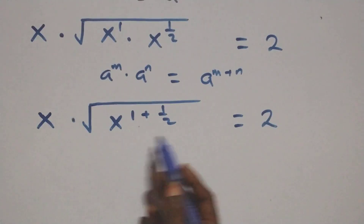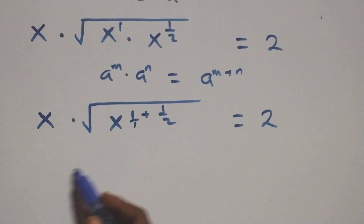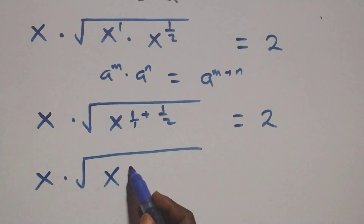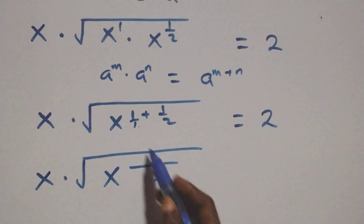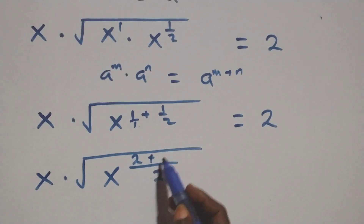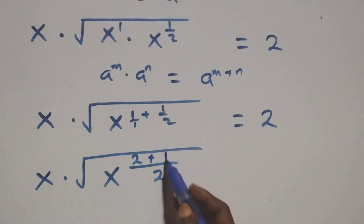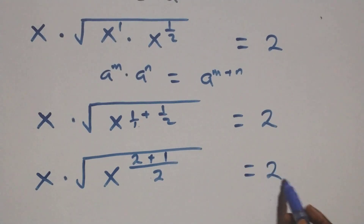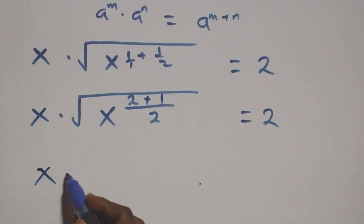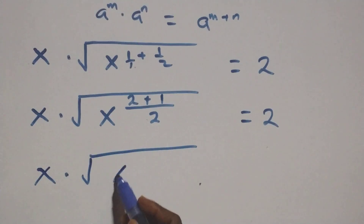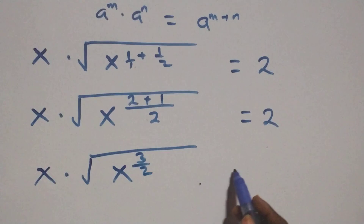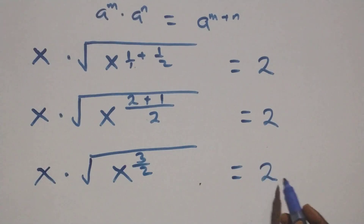We bring this power together. This is 1 over 1, so the exponent becomes: 2 times 1 is 2, plus 1 times 1 is 1, all over 2. That gives x raised to power 2 plus 1, that's 3, over 2 equals to 2.